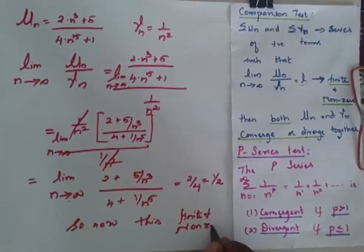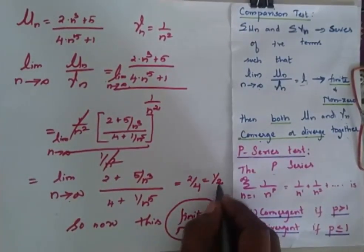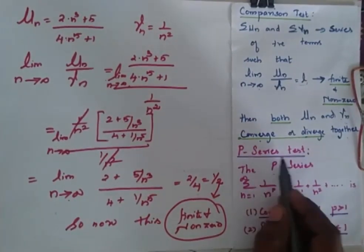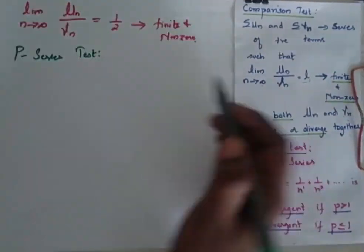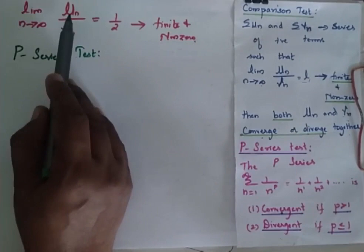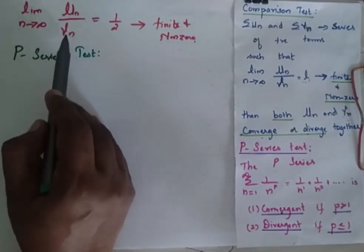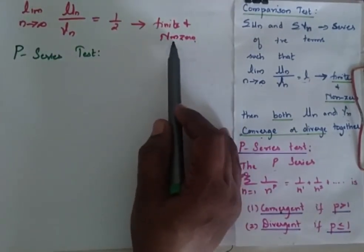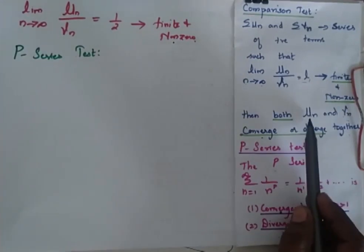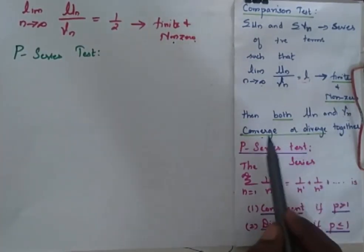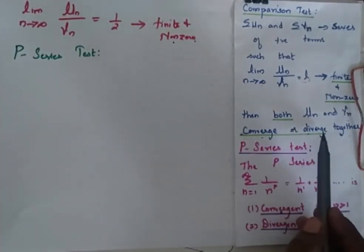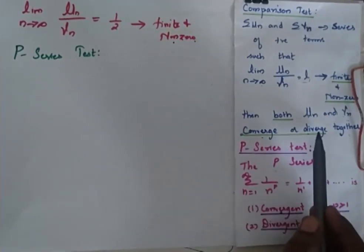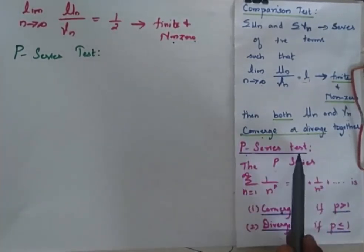When I substitute n = infinity, I get 2 by 4, which is equal to 1 by 2. This is finite and non-zero. Since the limit of un by vn equals 1 by 2, which is finite and non-zero, I know that un and vn converge or diverge together. To determine which, I go for the p-series test.